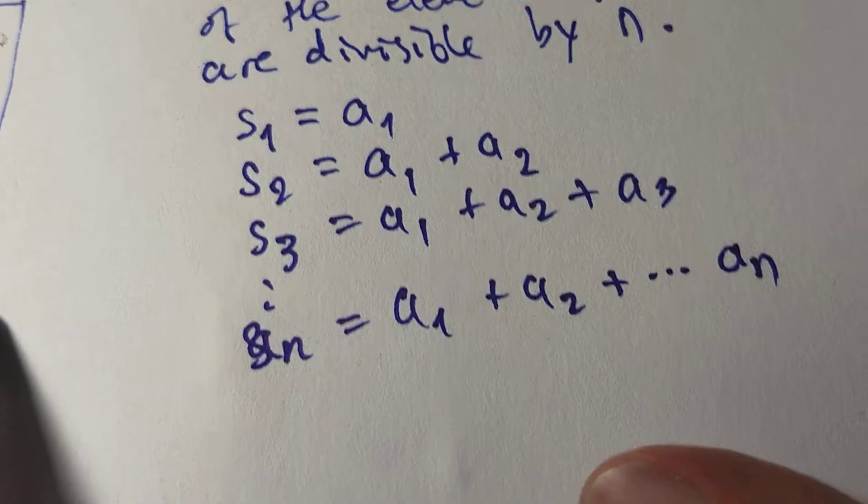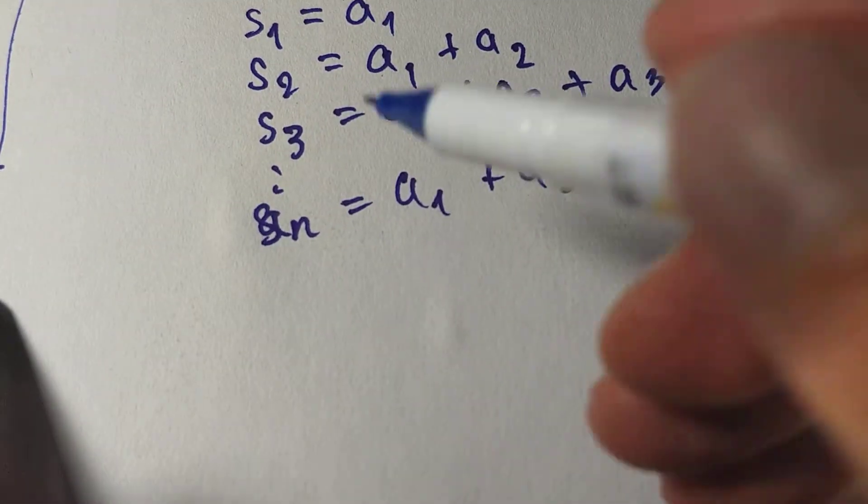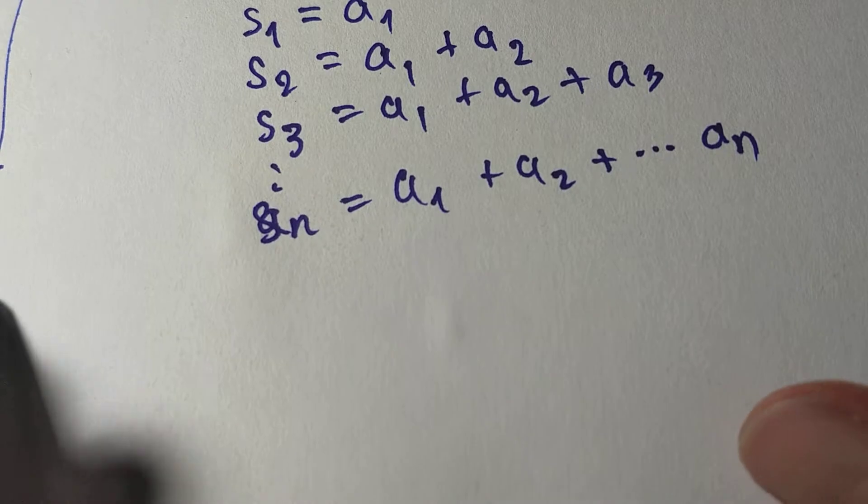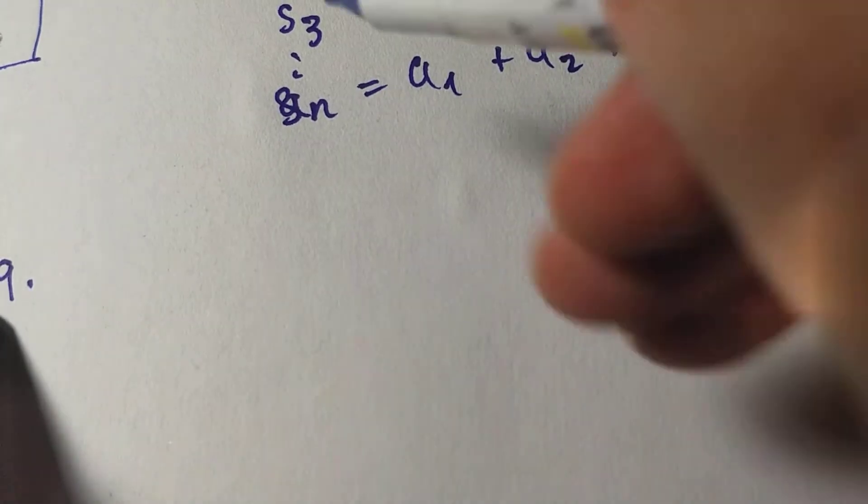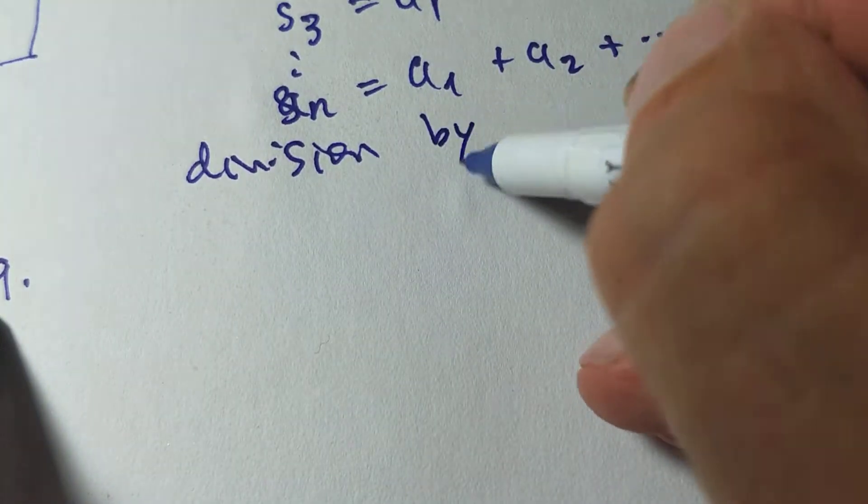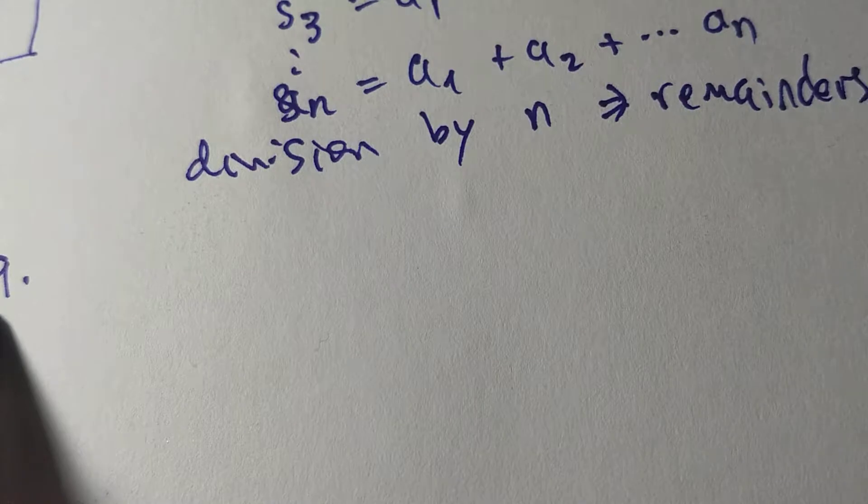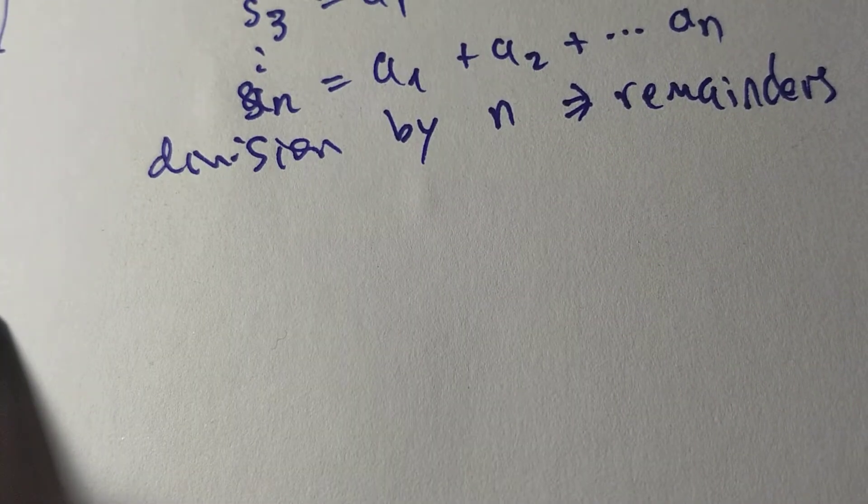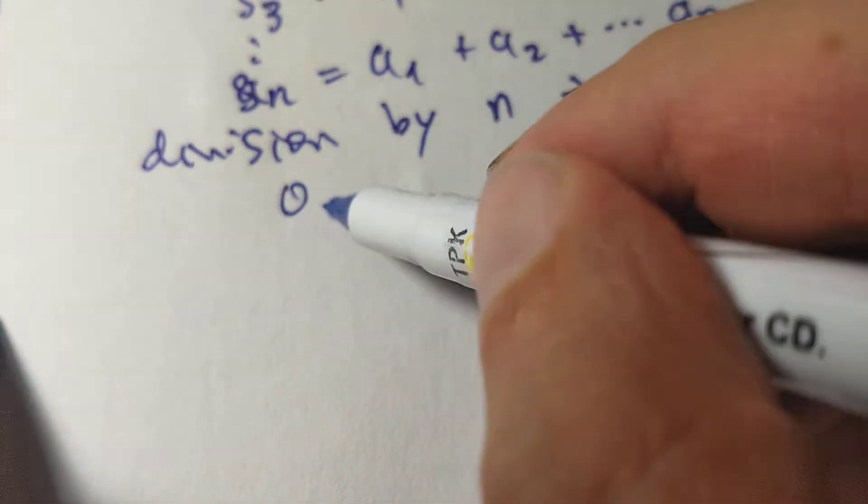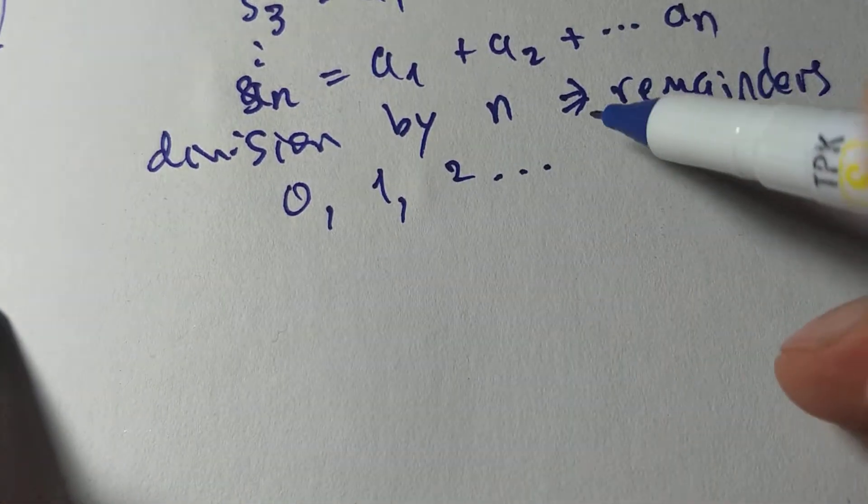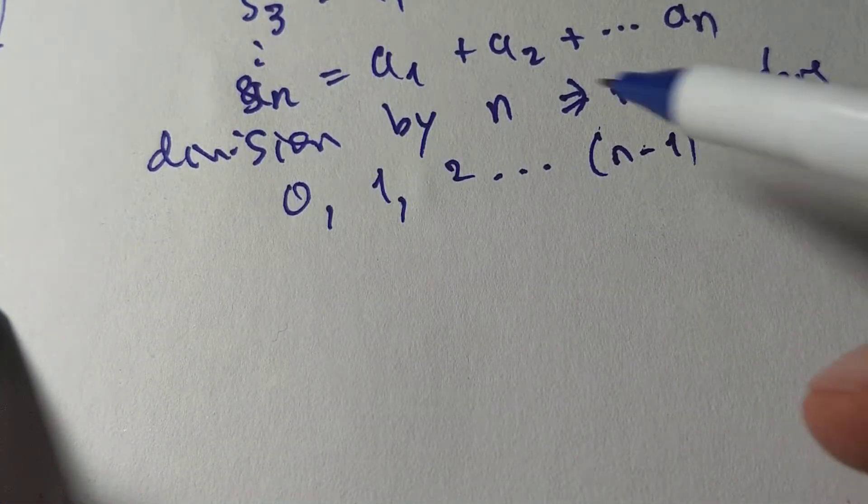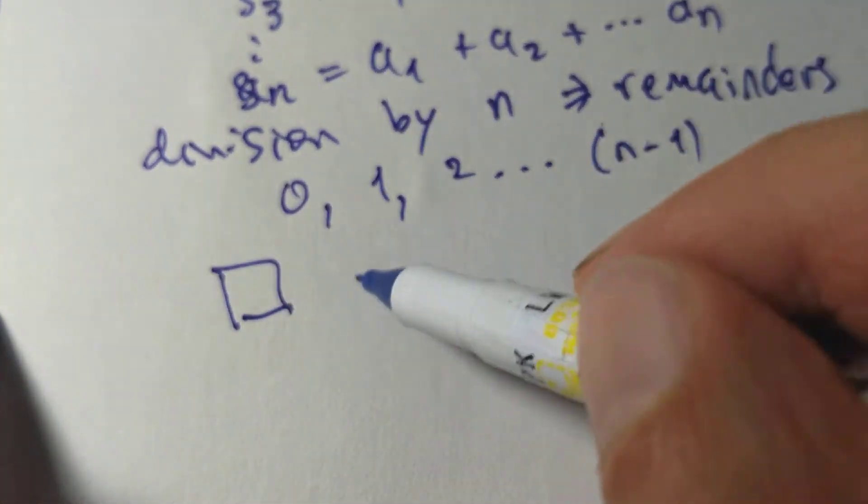Okay, like that. And now, we make some boxes. Now, we're talking about division by N. So, let's see. Division by N involves remainders. Division by remainders. What remainders are possible? 0, 1, 2, all the way up to N minus 1. So, let's put these in boxes.